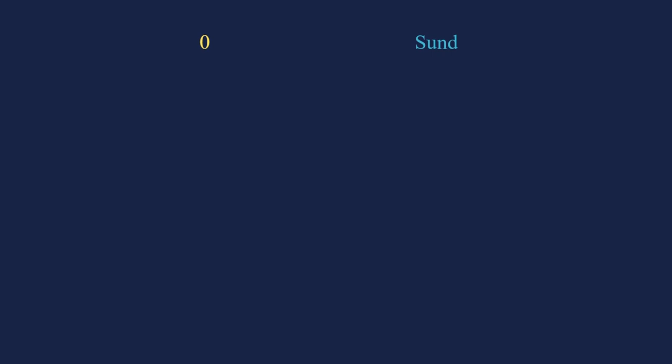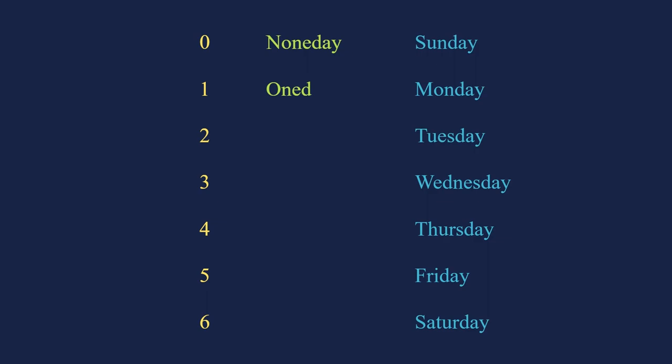With modular arithmetic under our belt, we can start looking for the doomsdays. We start with numbering the weekdays in a way that makes it easy to do calculations with them. We start with Sunday, which gets a 0, and end on Saturday, which is a 6. John Conway has a nice mnemonic for us to remember this. We can corrupt the names of the weekdays slightly to sound more like the associated numbers. None day, one day, Tuesday, trebles day, fourth day, five day, six a day.